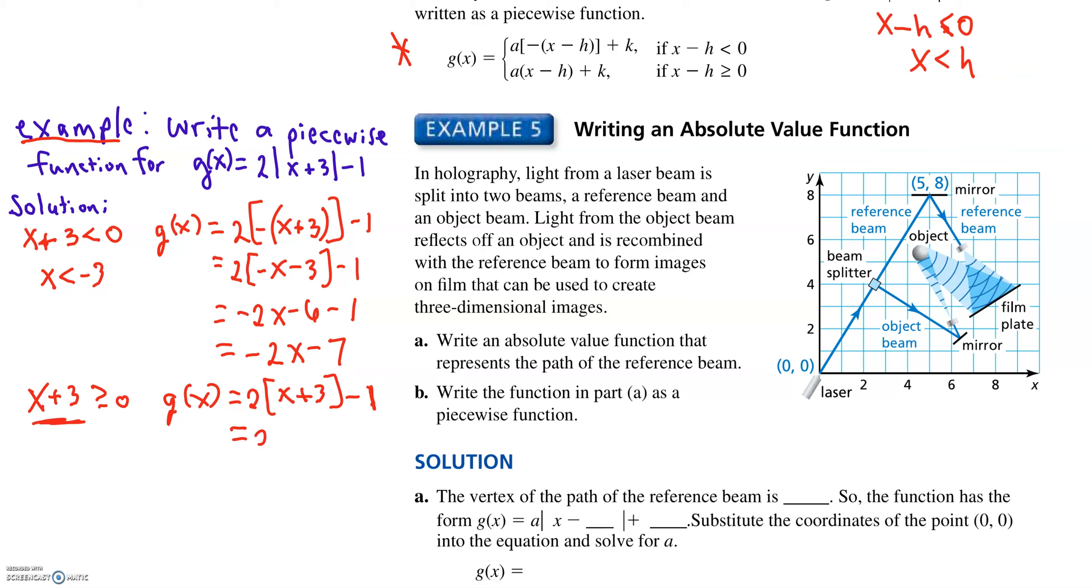So the absolute value is just going to be x plus 3. So we distribute the 2. Combine like terms, we have 2x plus 5, and that's what will happen if x plus 3 is greater than or equal to 0, which transforms to x is greater than or equal to negative 3.